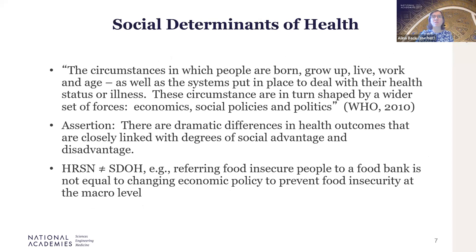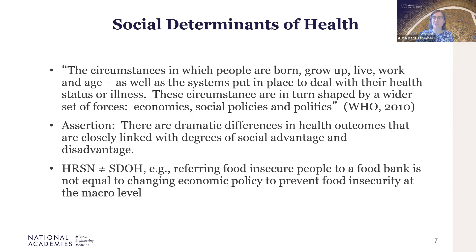Beyond that, we're aware of the term social determinants of health. We know that the circumstances in which people are born, grow up, live, work, and age are going to have an effect on their health and wellbeing. Health-related social needs are not equal to the social determinants of health — referring people to a food bank is not the same as changing policies to prevent food insecurity in the first place, or preventing child poverty. In 2021, pandemic-era spending provided a child tax credit that made a really dramatic difference in cutting child poverty.